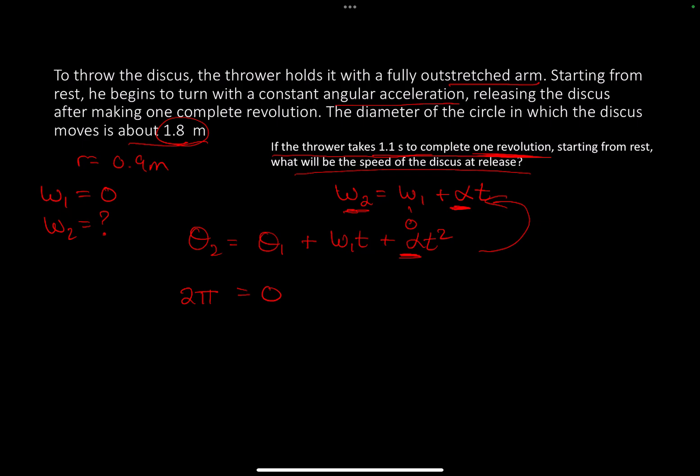Starting at 0, so this becomes 0 times t, plus one-half times alpha times 1.1 squared. I now have an equation with nothing but alpha unknown, so I can solve for alpha.